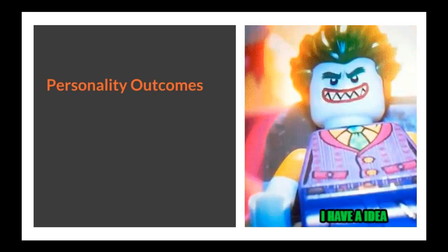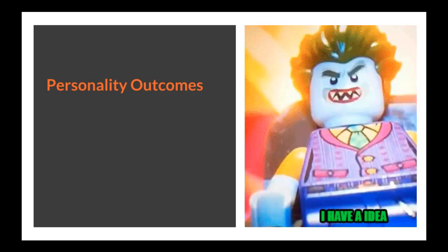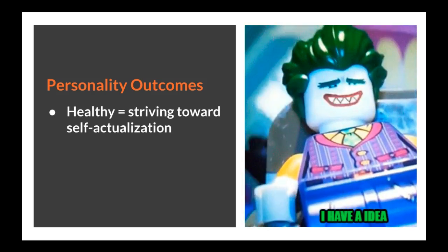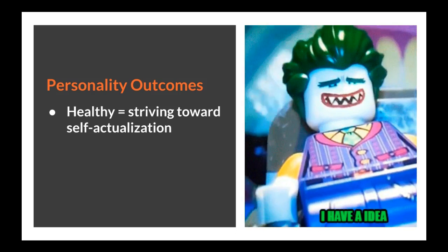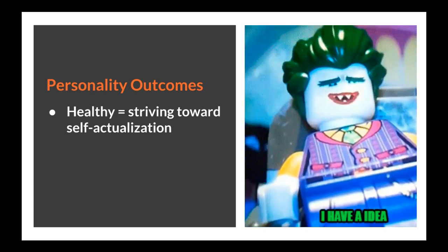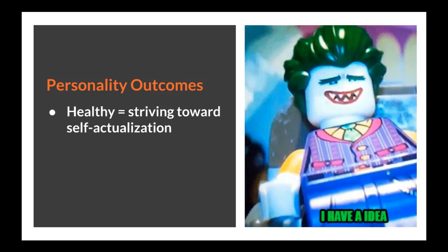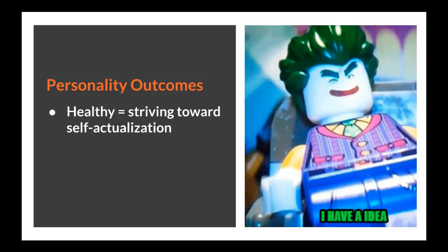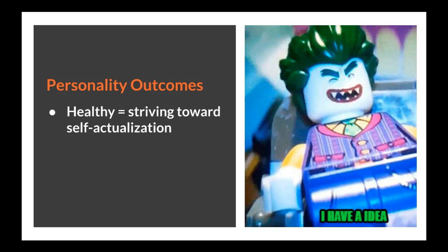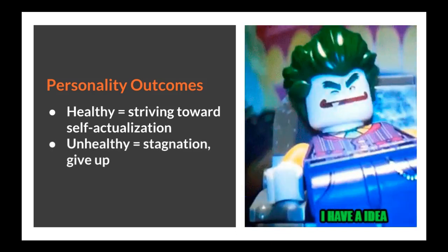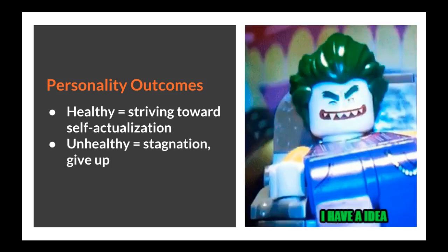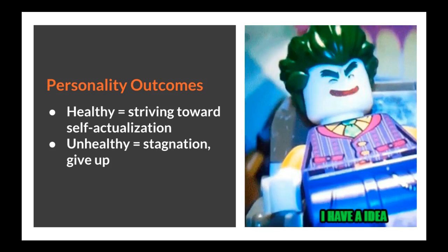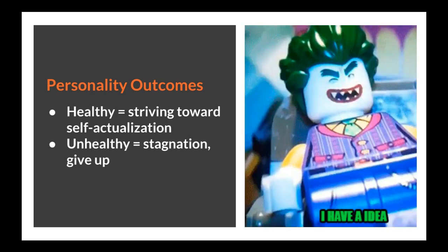When it comes to personality outcomes, there are two options. To have a healthy personality, an individual is continually striving to become all that he or she can be. They are motivated to push through challenges and work towards self-actualization. In the Lego Batman movie, Joker does not give up and continues to have new ideas on how to beat Batman. On the other hand, an unhealthy personality outcome can result when an individual fails to be motivated to meet their needs and becomes stagnated — these are individuals who tend to give up and do not pursue their potential.